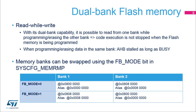With a dual bank memory, it is possible to read from one bank while programming or erasing the other bank. Code execution is not stopped when the flash memory is being programmed. When programming or erasing data in the same bank, the AHB is stalled as long as the flash memory controller is busy. Using the FB mode bit in the system configuration memory remap register, the two flash bank addresses can be swapped. When this bit is cleared, bank 1 is mapped at address 0x08000000 and aliased at address 0. When this bit is set, bank 2 is mapped at address 0x08000000 and aliased at address 0, which allows the device to boot into bank 2.